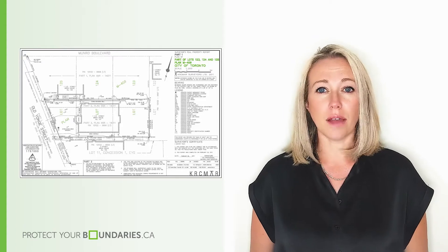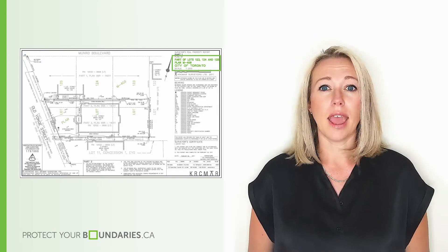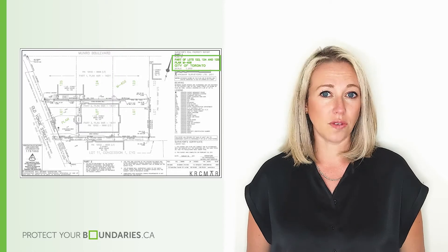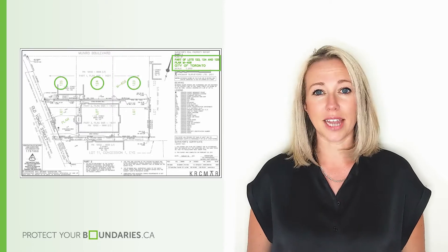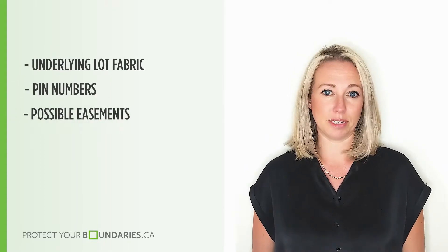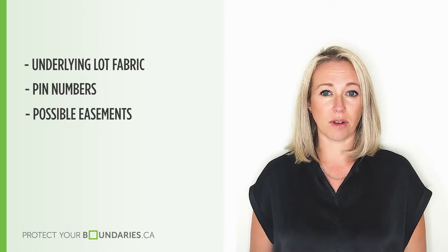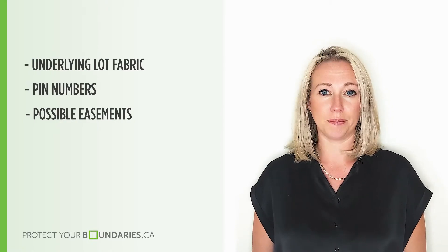The underlying lot fabric is listed in the title block and integrated visually on the survey plan in dashed lettering. The plan also depicts legal information of adjoining properties, including their underlying lot fabric, pin numbers, and possible easements. This provides a solid legal frame of reference for the survey plan.